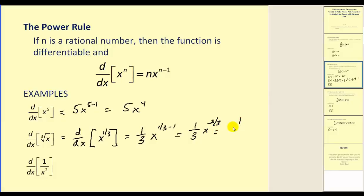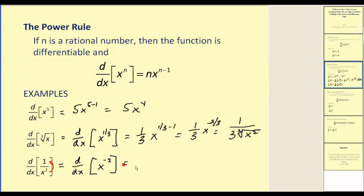Simplifying this, we would have one over three x to the two-thirds in the denominator. Our original function was in radical form, so I'm going to convert it back: this would be one over the cube root of x squared. For this next derivative, we need to move x up into the numerator, so we would have x to the power of negative two. Finding the derivative: it would be negative two times x to the power of negative two minus one, which equals negative two times x to the power of negative three. Simplifying, moving x to the negative three into the denominator changes the sign of the exponent. So our final answer would be negative two divided by x to the third.